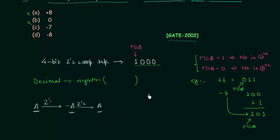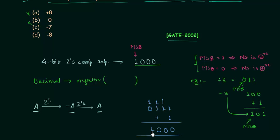To find the magnitude, we take the 2's complement of 1 0 0 0. First, the 1's complement is 0 1 1 1. Then adding 1 gives 1 0 0 0, which equals 8. So the number is negative 8, meaning minus 8. Option D is correct and option C is incorrect.